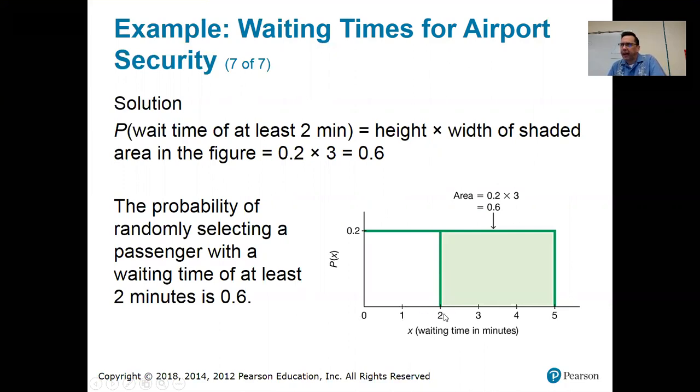It has a width of three, right? From two to five, five minus two is three. And the height is still 0.2. So throughout this problem, the height of the rectangle is always going to be 0.2. So height times width 0.2 times three is 0.6. The probability of this randomly selected passenger waiting at least two minutes is 0.6.